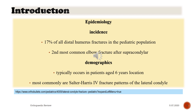Epidemiology: Lateral condyle fractures represent 17% of all distal humerus fractures in the pediatric population, making them the second most common elbow fracture after supracondylar fractures. Demographics: typically occurs in patients aged 6 years. Most commonly presents as a Salter-Harris fracture pattern of the lateral condyle.